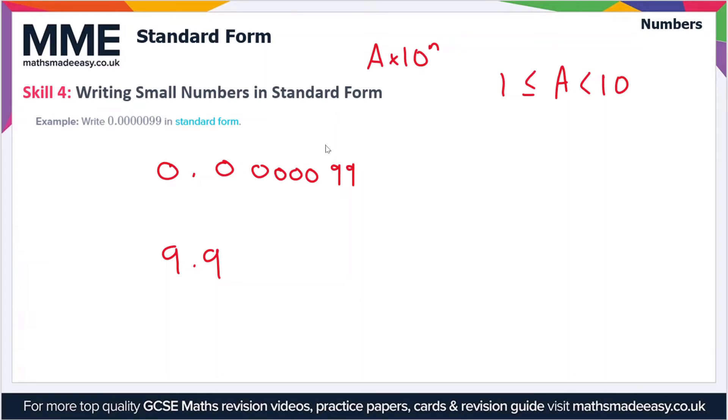Now we just have to work out how far we've moved the decimal place. We've got 1, 2, 3, 4, 5, 6 spaces to move the decimal point between the two nines.